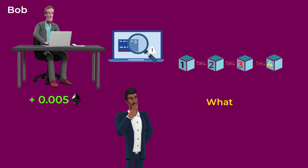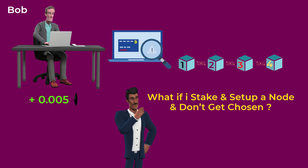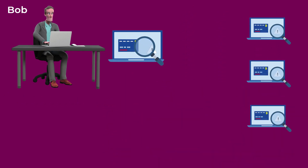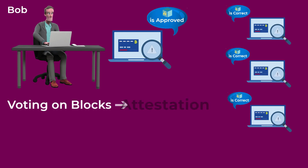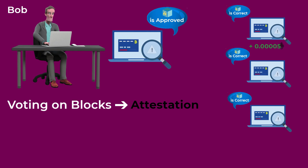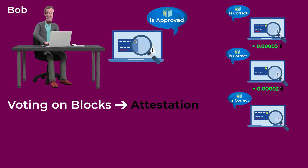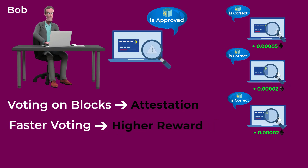You may be wondering: what if I stake my crypto and set up a node, but don't get chosen by the network — will I still earn any rewards? Before Bob can earn any reward or add his block to the blockchain, other validators like you need to approve his work first and make sure he didn't approve any fraudulent transactions or made an error while verifying the block. This is called attestation. When you attest correctly that the block is accurate, you also earn an attestation reward, though it is considerably low compared to Bob's. On Ethereum 2.0, the attestation reward is approximately 0.00002 ETH, and you can increase it if you voted correctly after a short period of time.